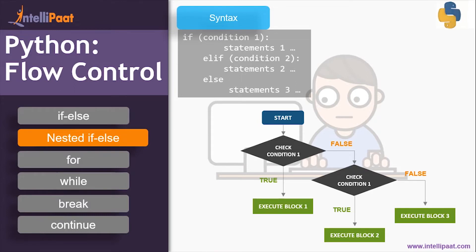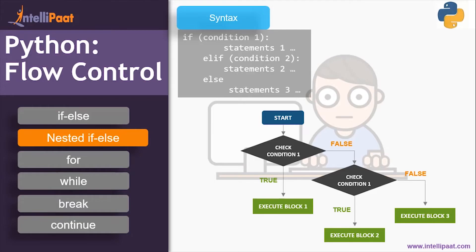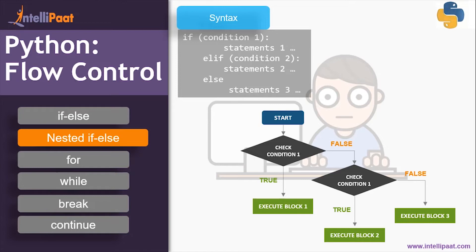If condition one is true, the block under the if part is executed — that is, execute block one. If the first condition is false, go and check the second condition, the else-if condition. If the else-if condition is true, your second block is executed. If none of them are true, the else block is executed — block three. Remember, there is no condition associated with the else block; it only executes if all the above conditions are false.